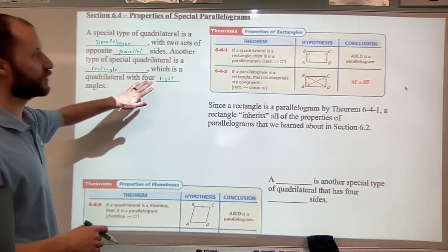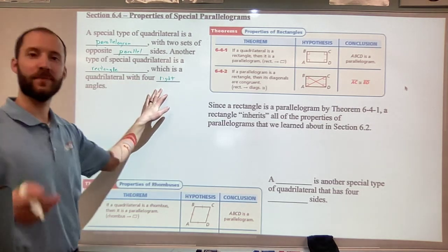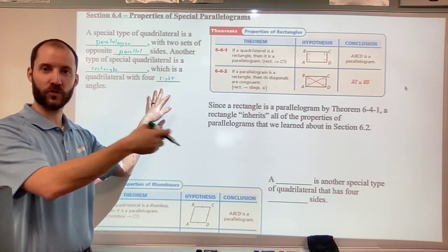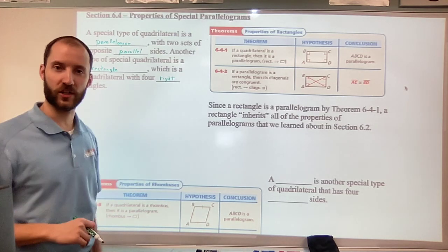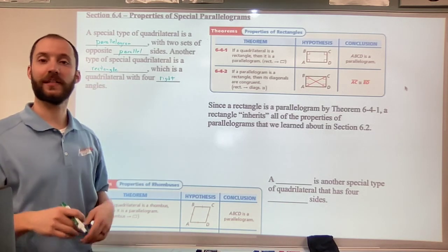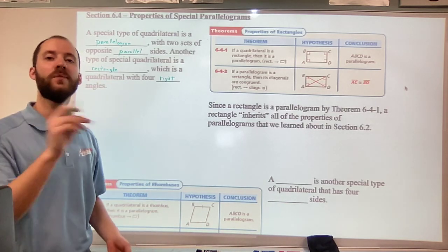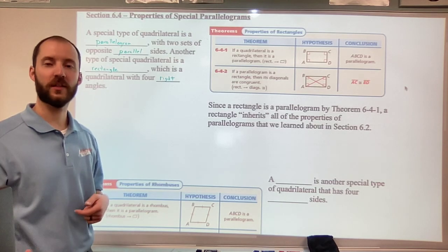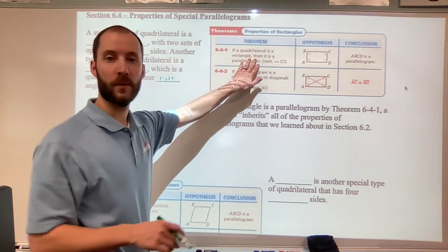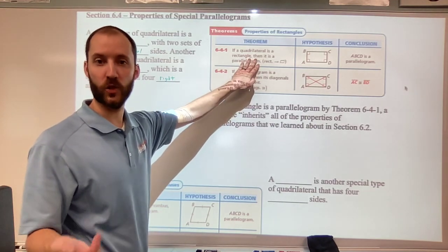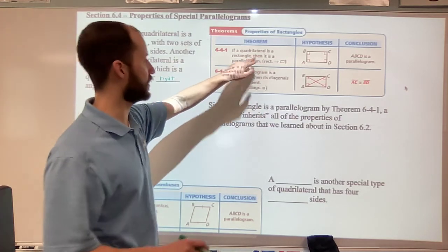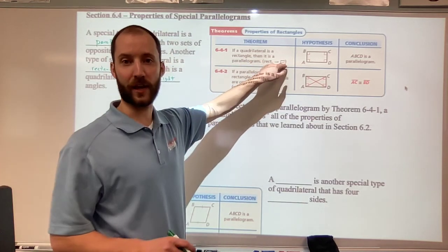Now if it has four right angles, that means that every set of consecutive angles, or angles that are next to each other, they're both 90, add them up, they're supplementary. So any pair of consecutive angles are supplementary, which makes it a parallelogram too. So on the first page of your notes, a rectangle is also a parallelogram.